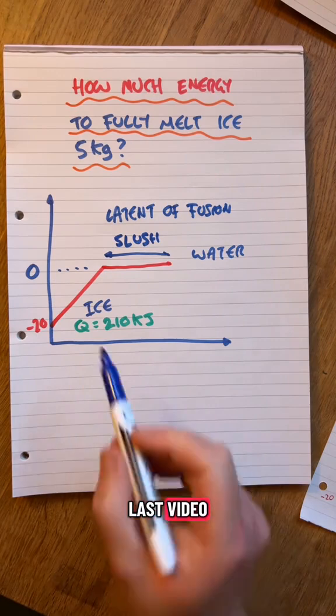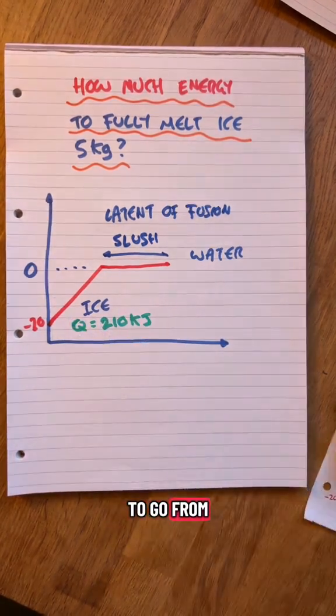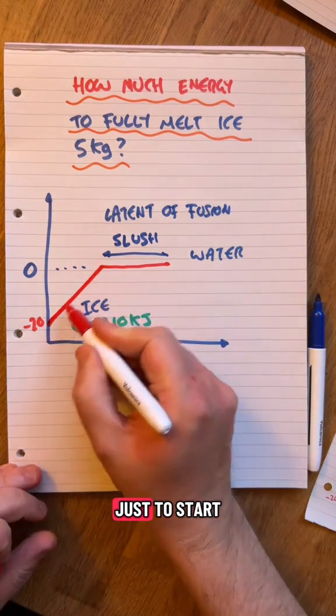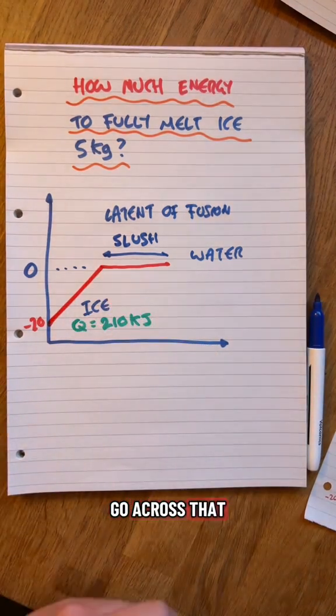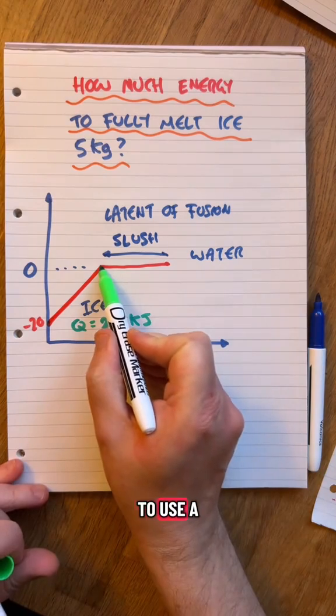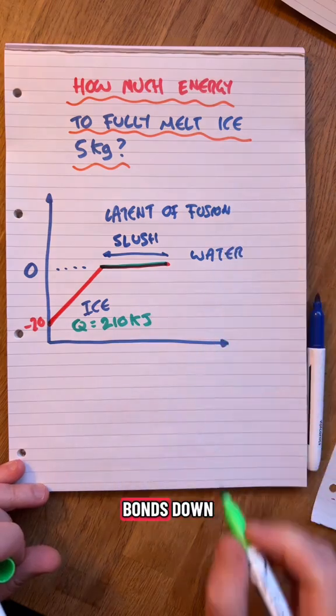So we worked out in our last video we need 210 kilojoules to go from minus 20 up to zero just to start to melt it. Now we want to go across that flat bit. So we need to use a thing called latent heat of fusion. It's breaking the bonds down.